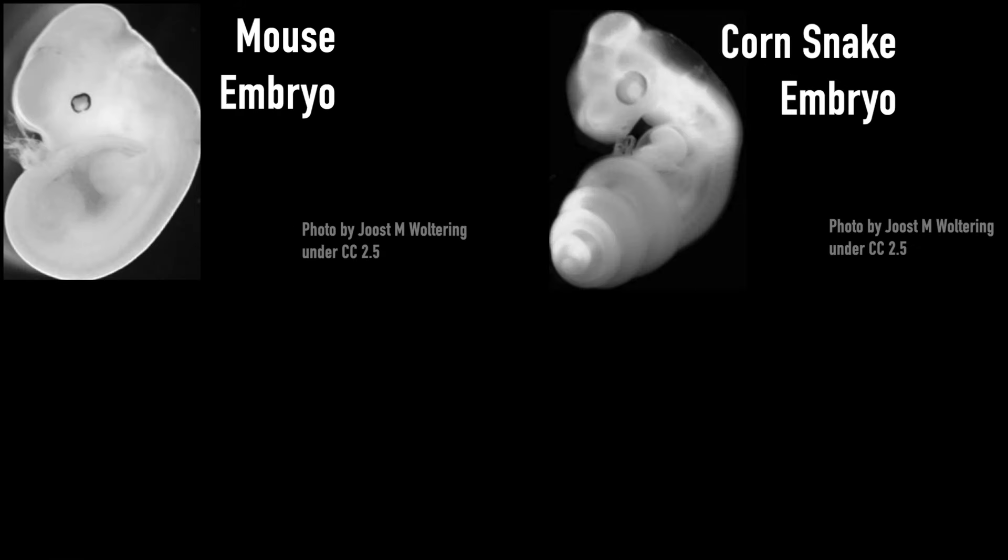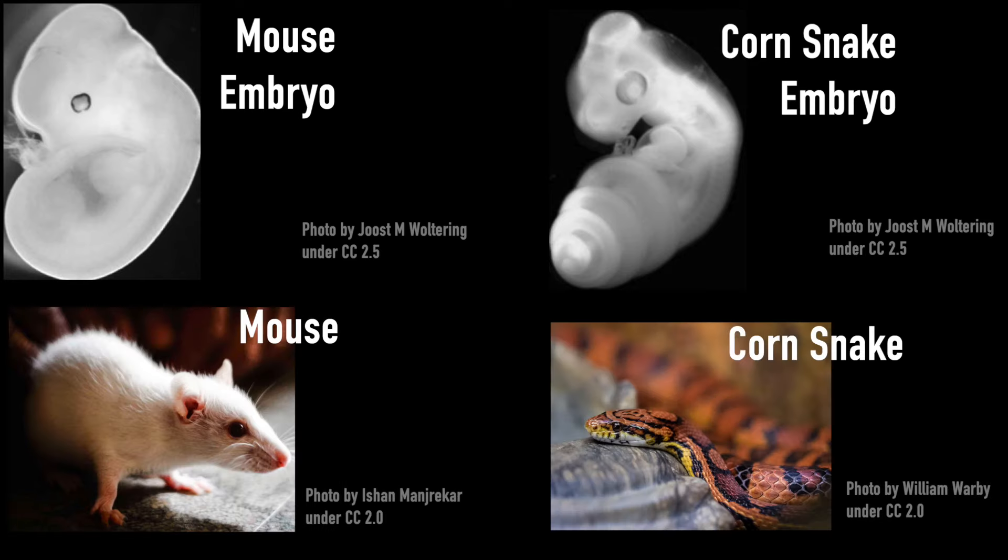Studying embryos is a helpful way for scientists to find similarities between species, similarities that might not be visible once the animals are born and grow up. In general, embryos of related species have more obvious homologous features at earlier stages of development, before the embryo's anatomy becomes highly specialized.